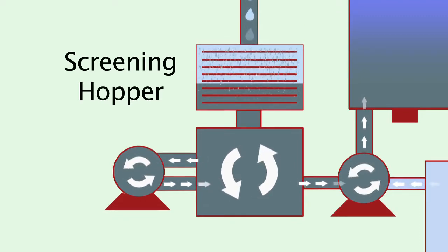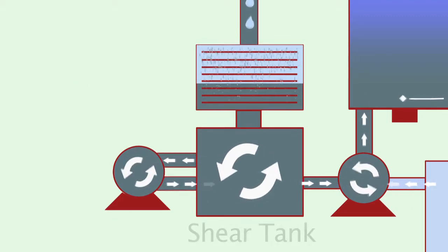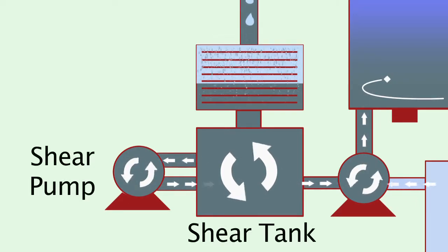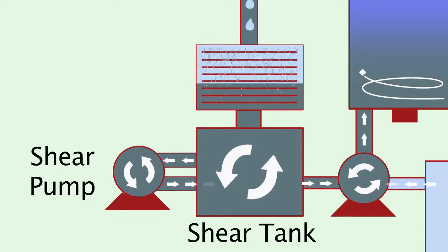The screening hopper is designed to screen out oversized objects and debris. The sludge then flows into a shear tank, where a dedicated shear pump suspends the solids through constant circulation which further degrades oversized debris.